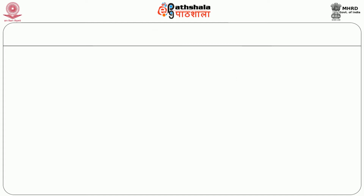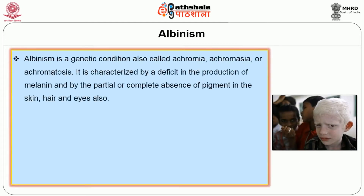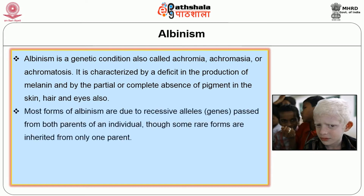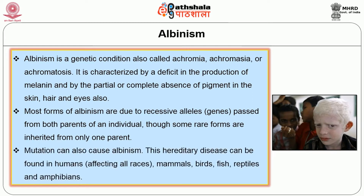The third important disease is Albinism, a genetic condition also called achromia, achromasia or achromatosis. It is characterized by a deficit in the production of melanin and by the partial or complete absence of pigment in the skin, hair and eyes. Most forms of albinism are due to recessive alleles passed from both parents, though some rare forms are inherited from only one parent. Mutations can also cause albinism. This hereditary disease can be found in humans of all races, as well as in mammals, birds, fish, reptiles and amphibians.